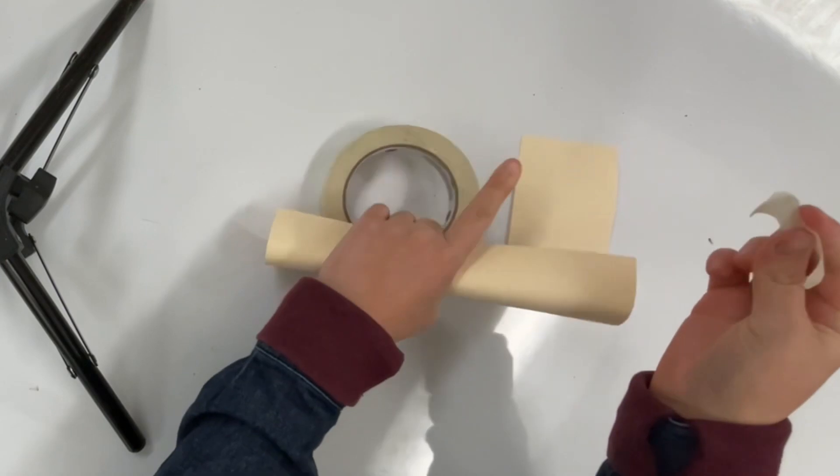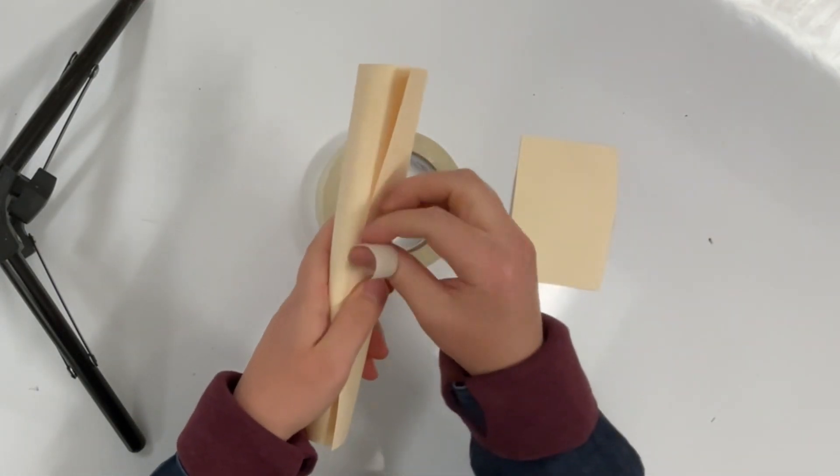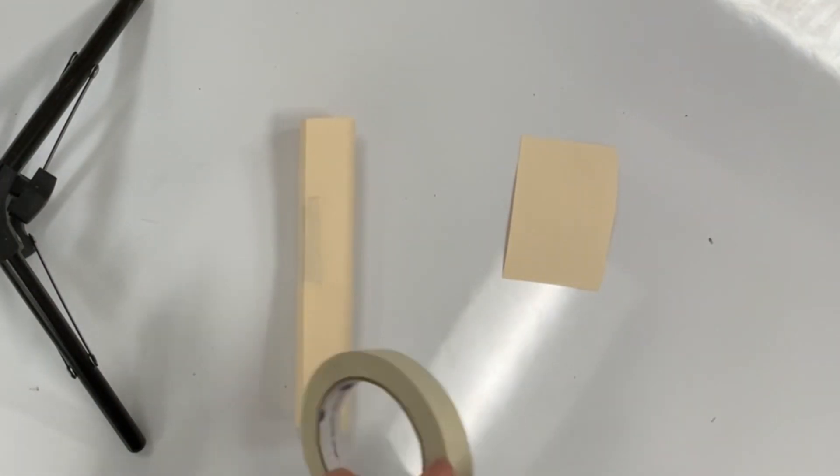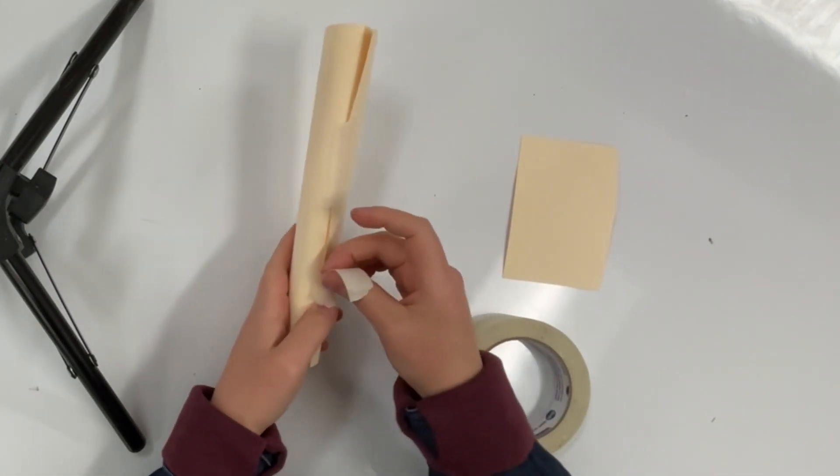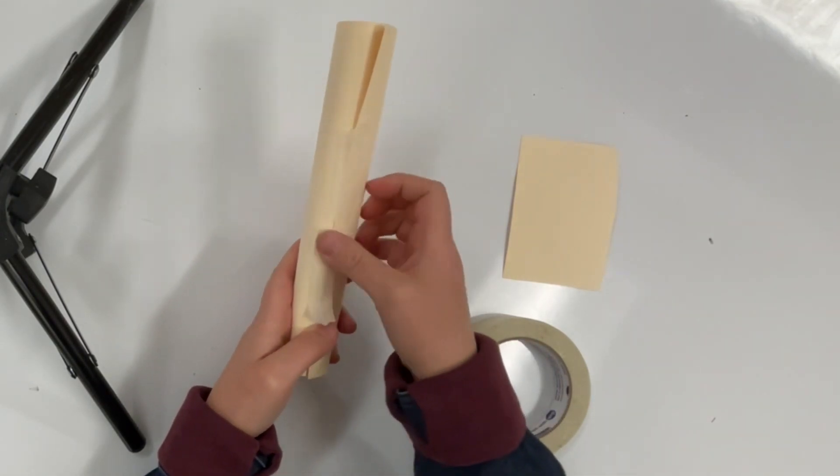Now it might help you to have your tape handy already because you're going to want to tape your tube together so it stays. And you want to make sure it's nice and round. So if it's a little bit pinched, it's probably not as round, so just handle it very gently so that it stays as round as it can be.